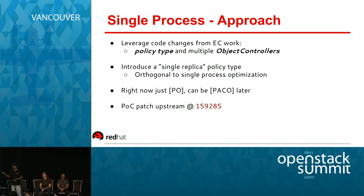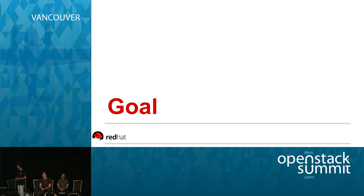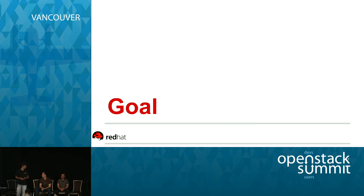Right now, there's a patch from Chiago that combines proxy and object as a single process. Once Pete's work on pluggable backends is done, we can get to a state where all the processes — proxy, account, container, and object — run as a single process talking to the clustered file system backend. Luis is going to talk about how all these efforts fit together as pieces of a puzzle.